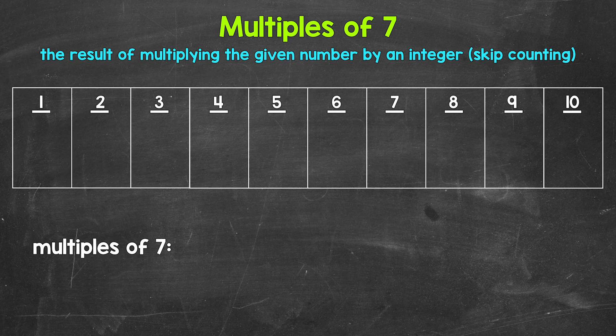So taking a look at the multiples of seven, let's start with one times seven, that's seven. Seven is the first multiple of seven. Then we have two times seven, that's 14. 14 is the second multiple of seven.